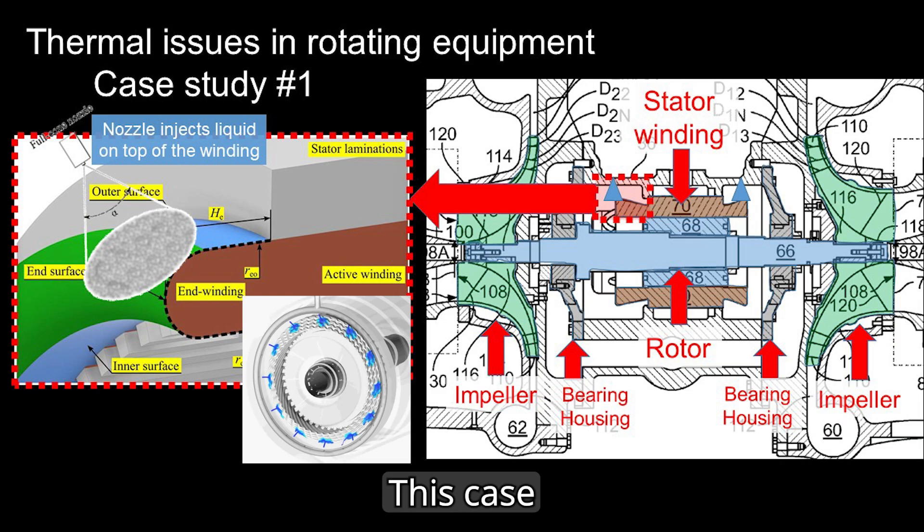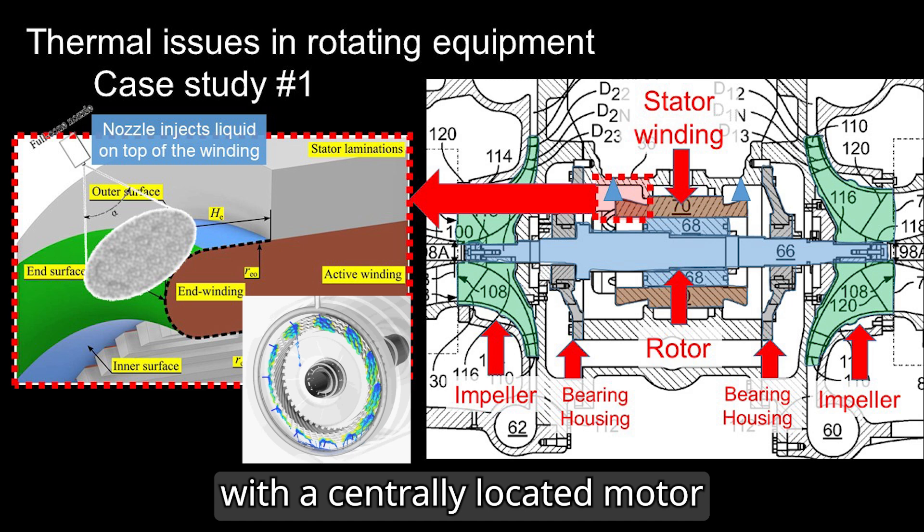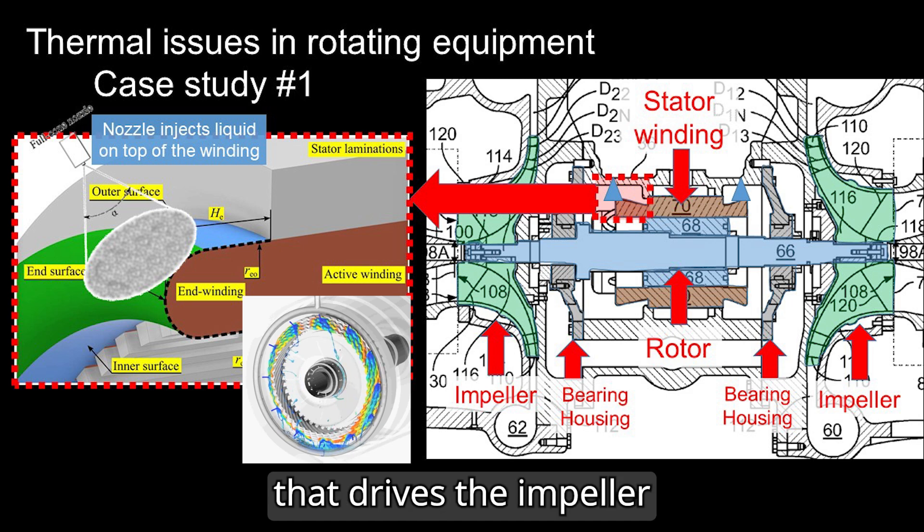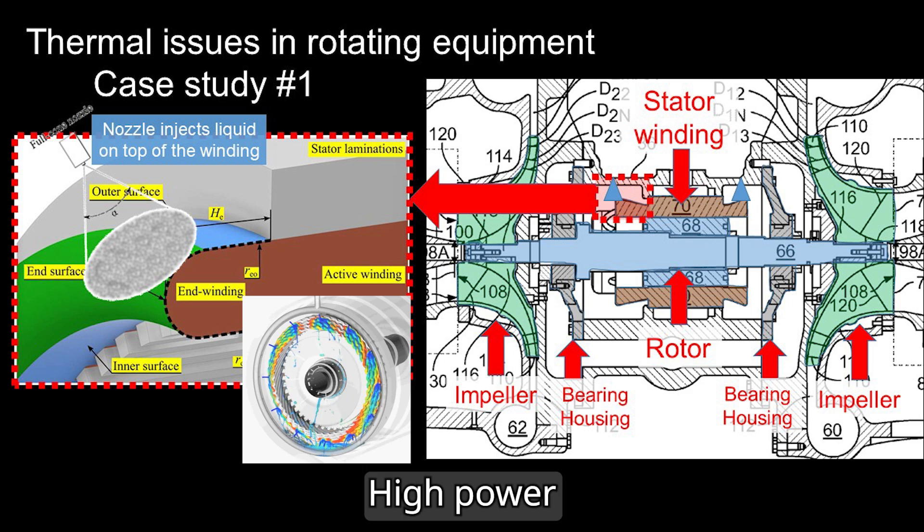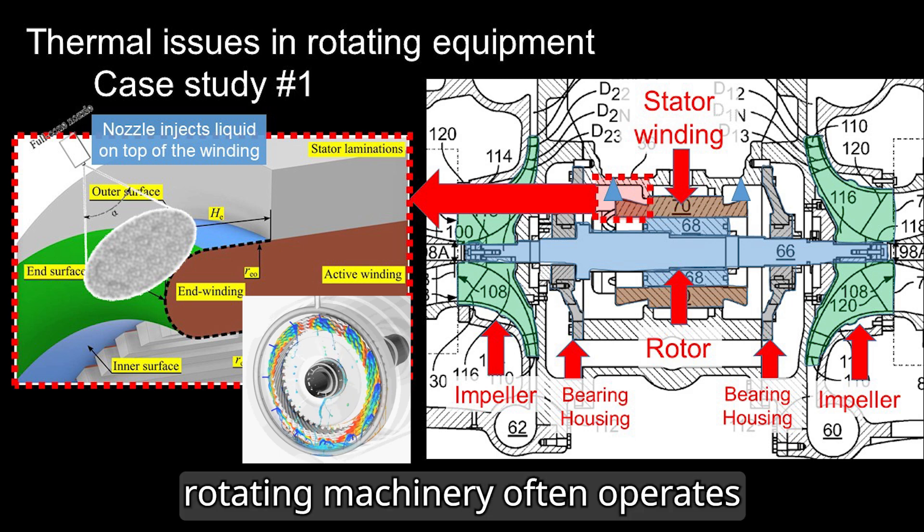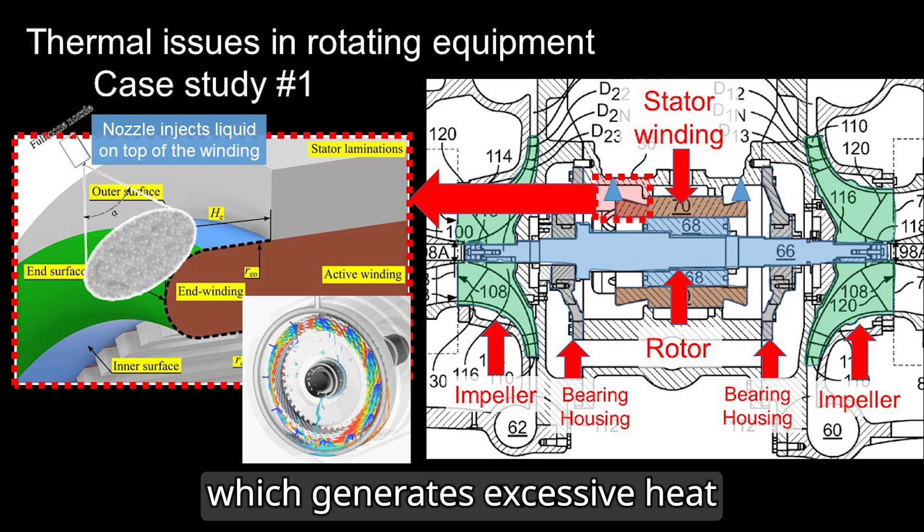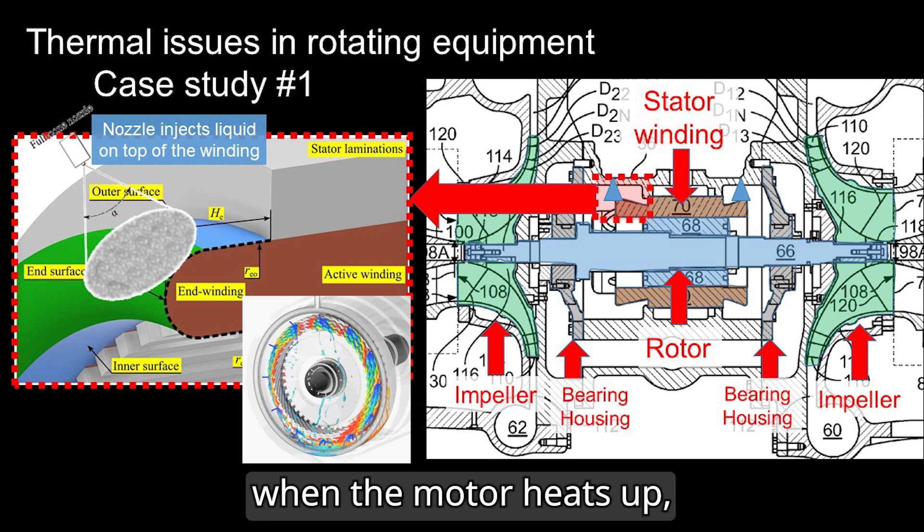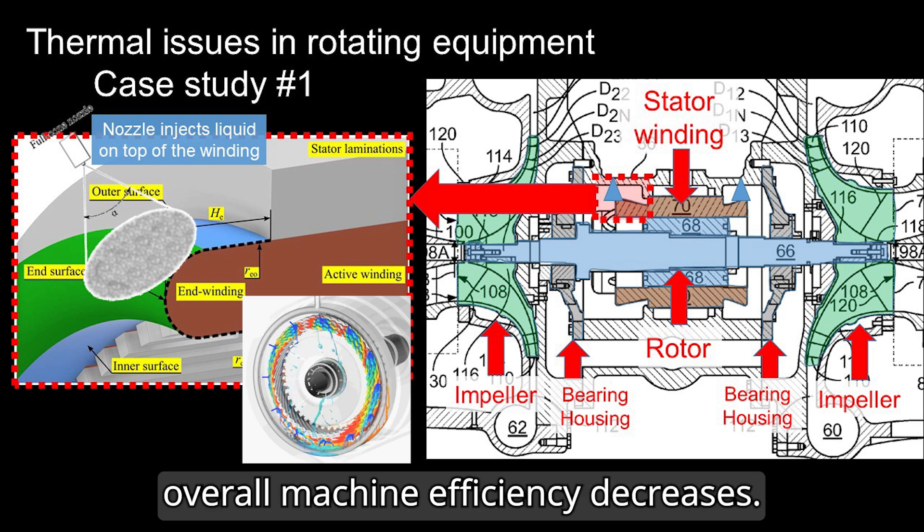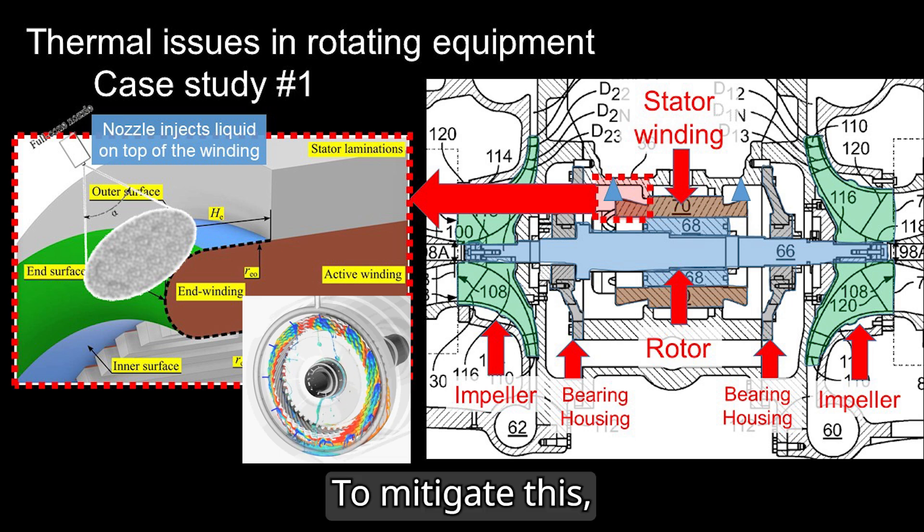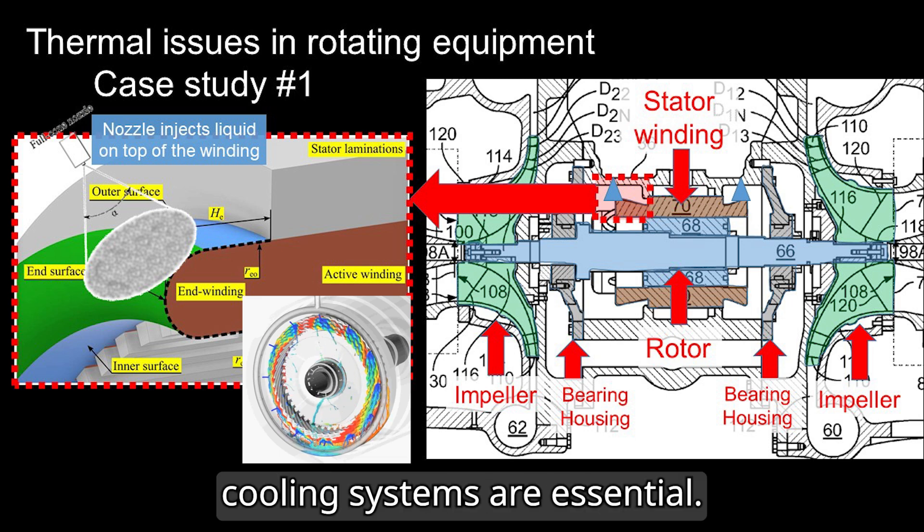This case highlights a compressor with a centrally located motor that drives the impeller to generate compressed flow. High-power rotating machinery often operates with high voltages and fluxes which generates excessive heat. When the motor heats up, overall machine efficiency decreases. To mitigate this, cooling systems are essential.